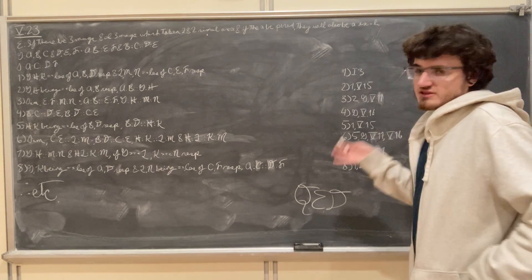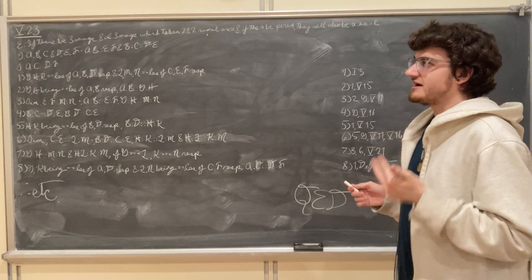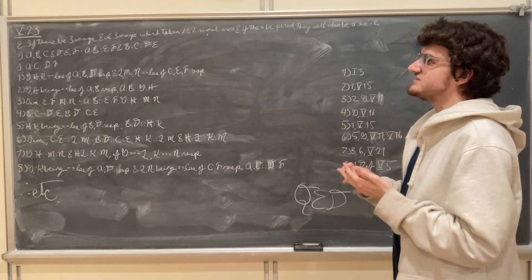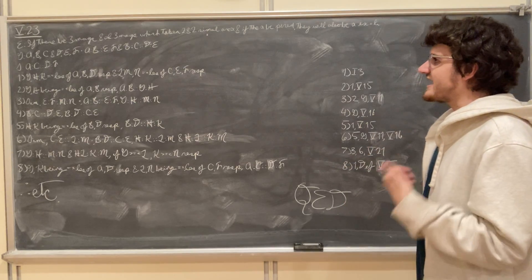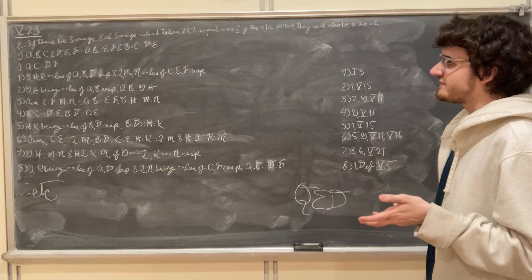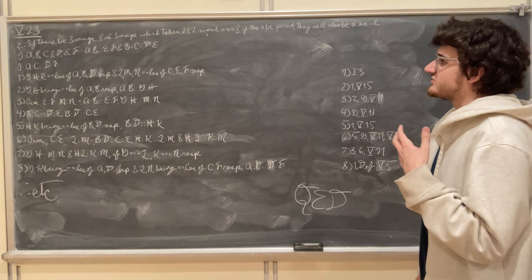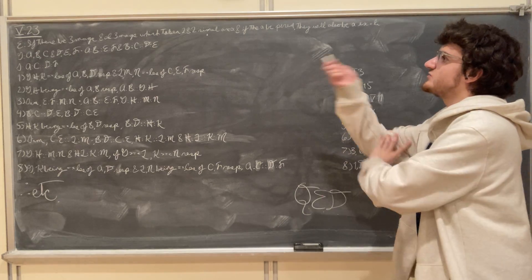What we're given is three magnitudes A, B, and C, and another three magnitudes D, E, and F, such that A is to B just as E is to F, and also B is to C just as D is to E.